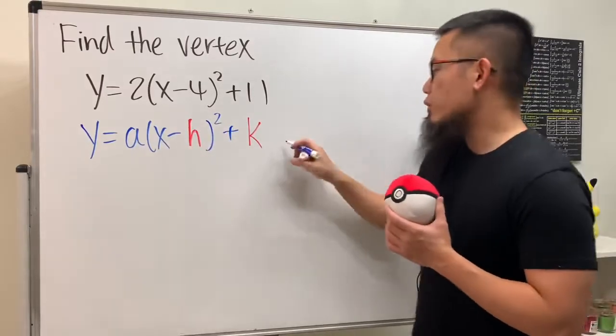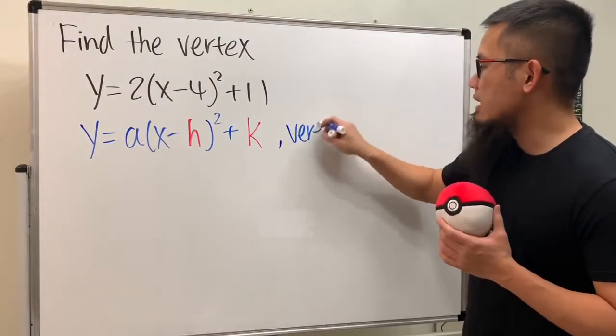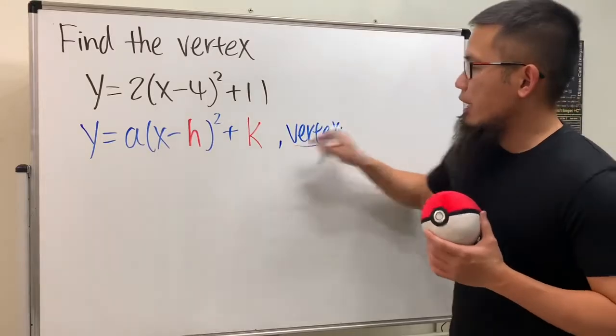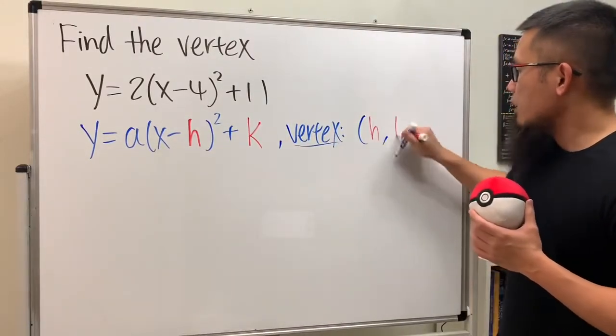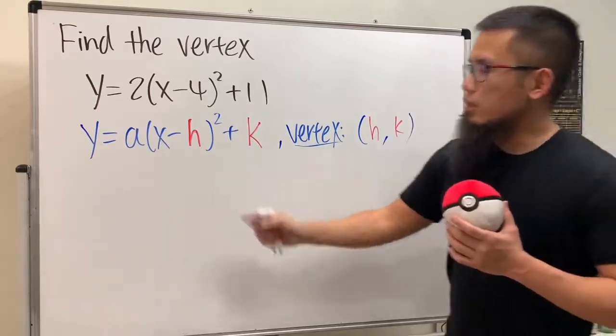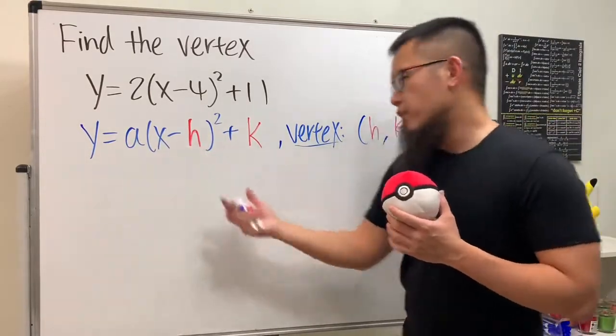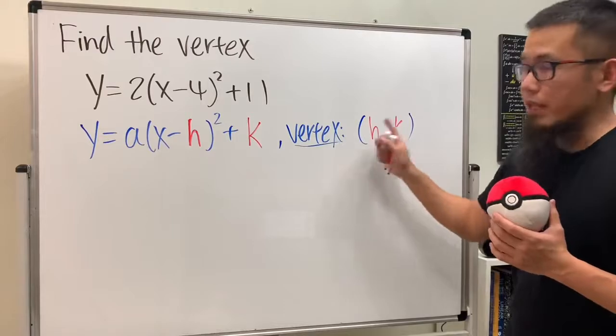Well whenever we have an equation in this form we know that the vertex is at h comma k. And one of the things that you have to remember is even though we have minus h in the formula, the vertex is actually at positive h.